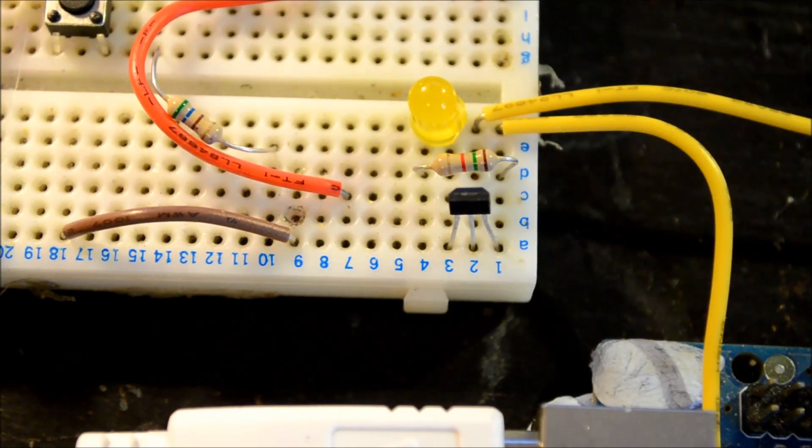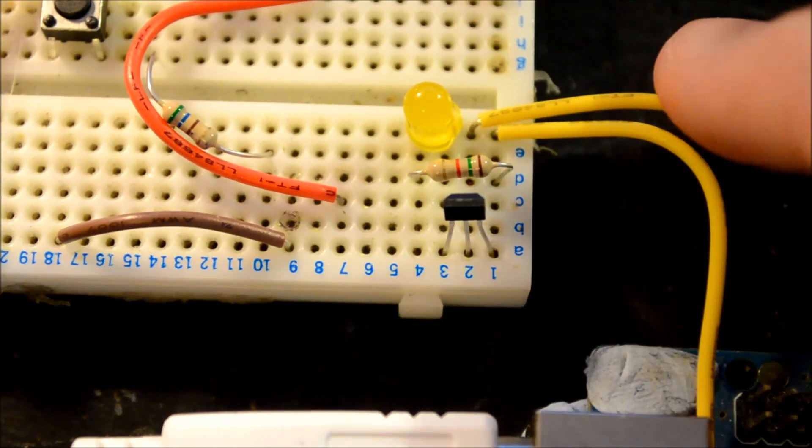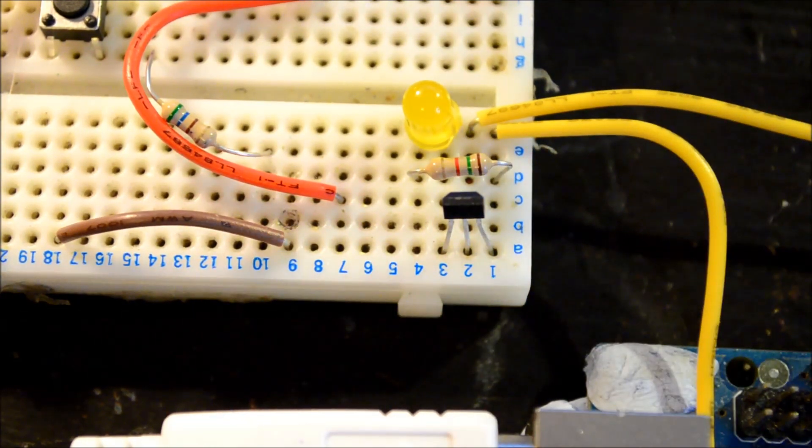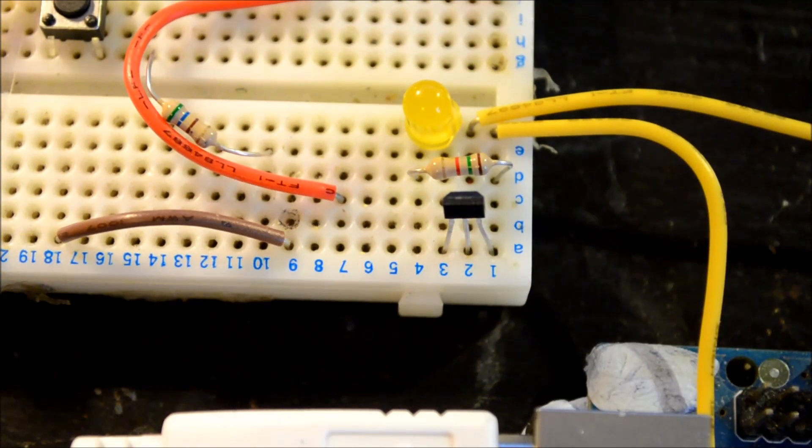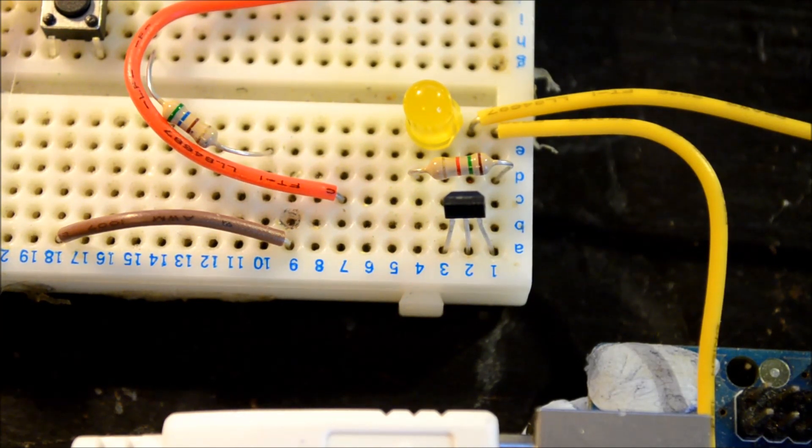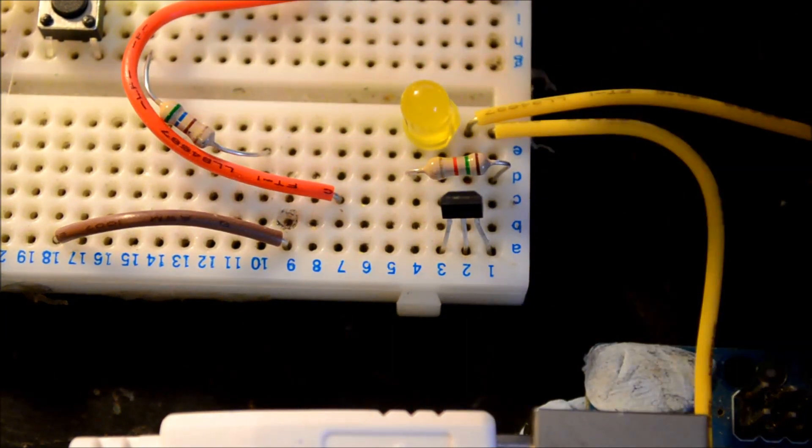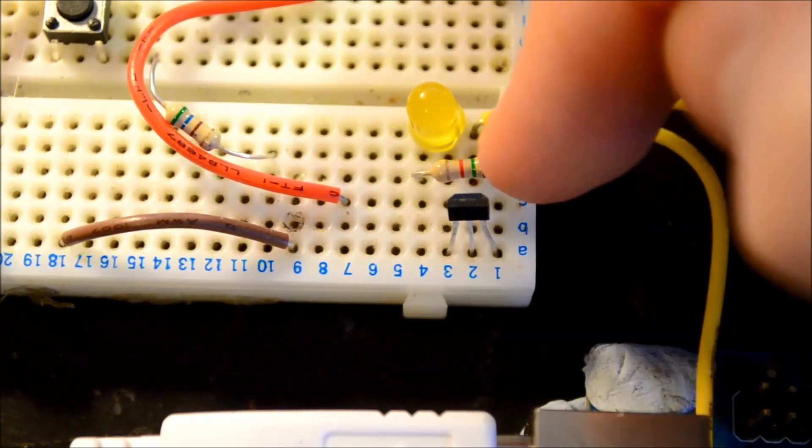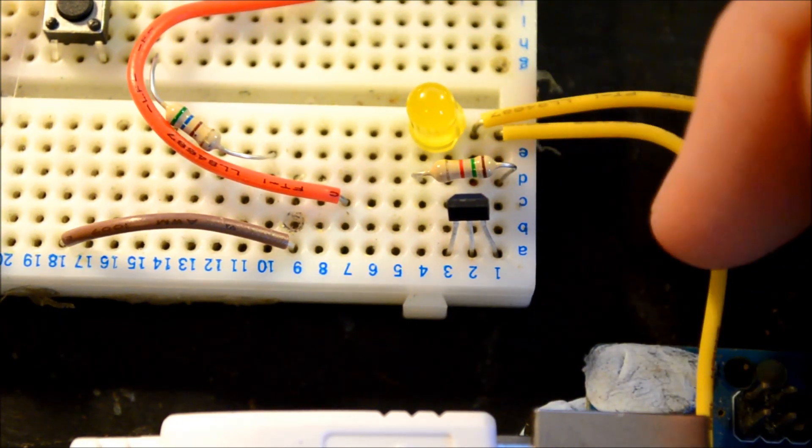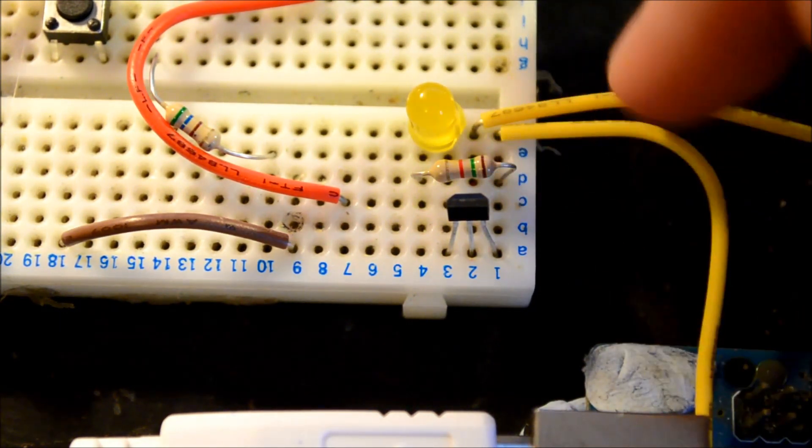This is an even simpler setup. I'm just using the Arduino to give the 5 volts. You can see here, this one is ground, and this one is 5 volts. Now looking at the diagram, we can see that when the switch is switched by a magnet, the output pin is pulled low. So I've got the positive side of the LED going through the resistor, going to the 5 volts supply. Just a current limiting resistor.